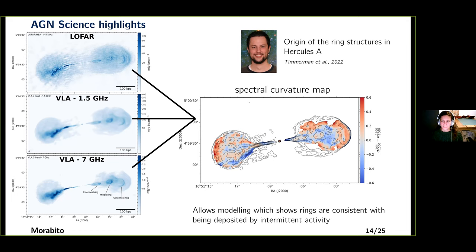The first result is a paper on the origin of the ring structures in Hercules A by Roland Timmerman, a PhD student at Leiden University. He used a combination of LOFAR and VLA data to make a spectral curvature map. The spatial resolution allows modeling of the spectral behavior in different regions, and Roland showed that the rings are consistent with being deposited by intermittent AGN activity — the AGN at the center is turning on and off on scales of a few thousand megayears. This is a really nice result that would not have been possible without low-frequency spatially-resolved information.